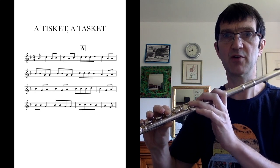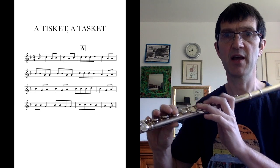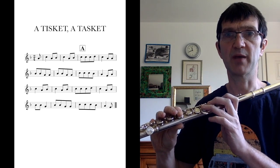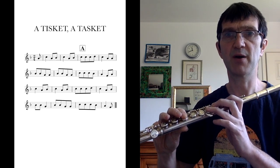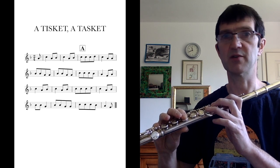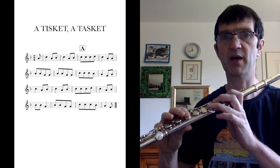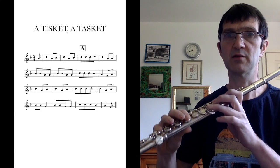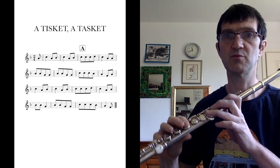And then, I want you to have a look at the tune of Tisket, Tisket. Now, it says two, four at the beginning. That means that every bar adds up to two crotchet beats. So, all the way through, you should be counting one, two, one, two, one, two.